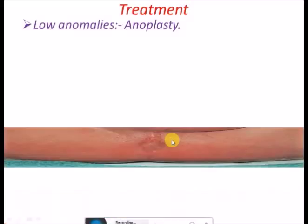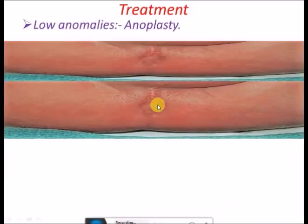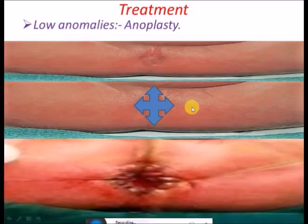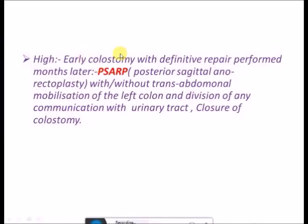For treatment of low anomalies, we do anoplasty. In anoplasty, a cruciate incision is given over the dimple or low anal fistula, the mucosa of the anal canal is opened, and the mucosa is stretched and sutured to the skin, completing the anoplasty. For high types, early colostomy is performed first, with definitive repair planned a few months later, as mobilization of sigmoid and descending colon may be needed.